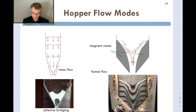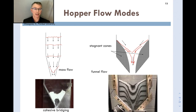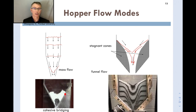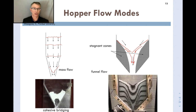Also shown is cohesive bridging — not a flow mode, but an example of flow stopping altogether. Some materials are cohesive and develop strength as they get compressed. They can develop enough strength to form a bridge that supports the weight of all the material above it, preventing any further discharge from the hopper.